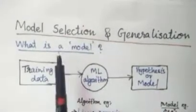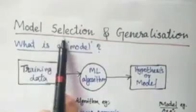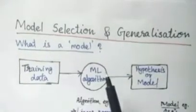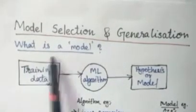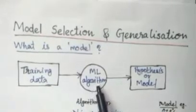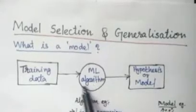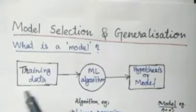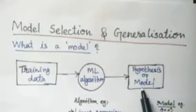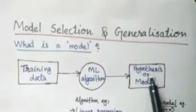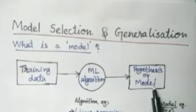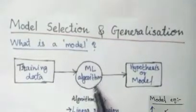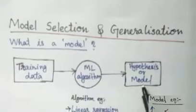Hi all, today we are going to discuss the topic model selection and generalization. This is an important topic. First of all, what is a model? You can see here a training data which is given as input to a machine learning algorithm, and the algorithm learns this data and constructs a hypothesis or model. So the model is the name used to refer to a hypothesis. When you train a learning algorithm with data, it will become a model.